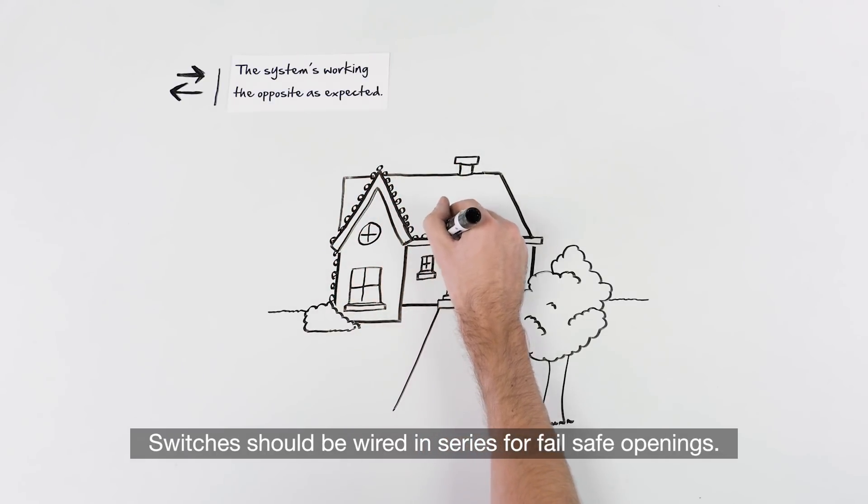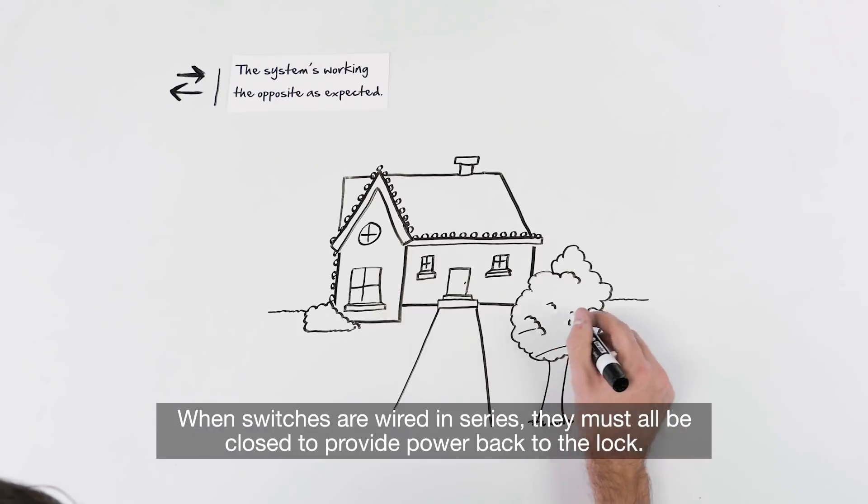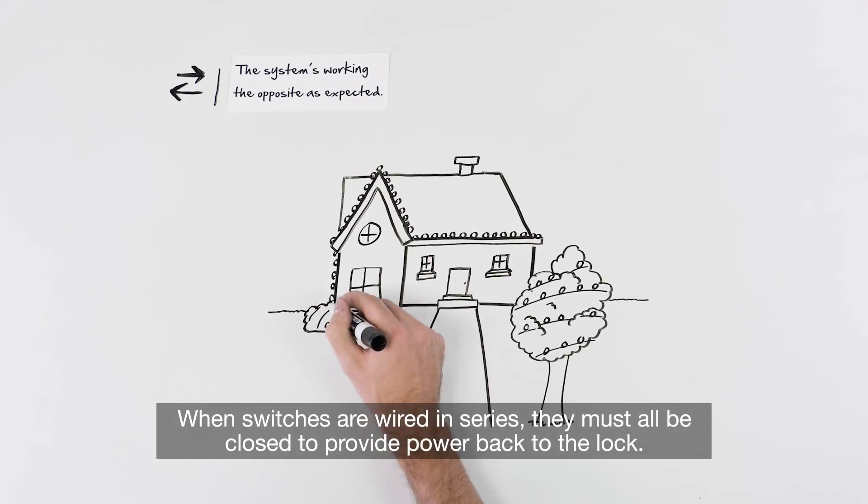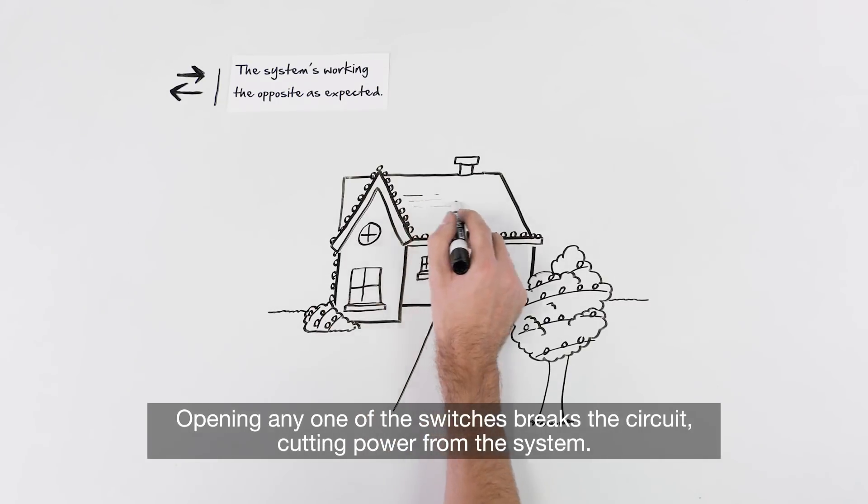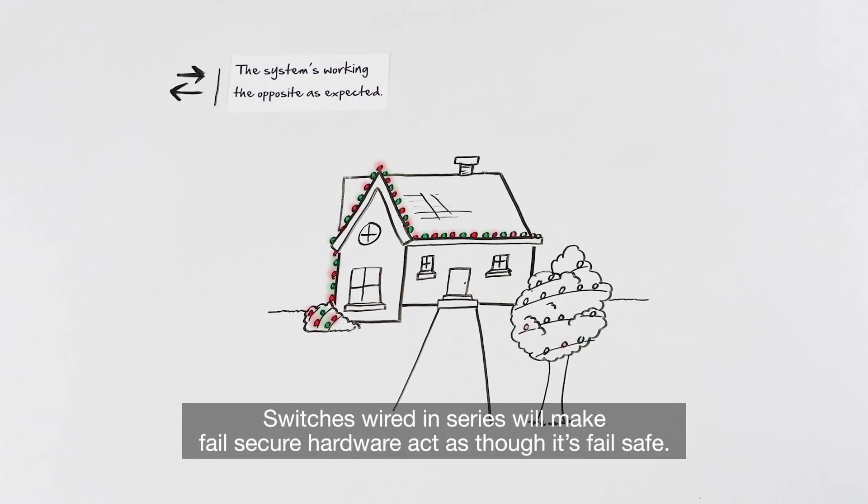Switches should be wired in series for fail-safe openings. When switches are wired in series, they must all be closed to provide power back to the lock. Opening any one of the switches breaks the circuit, cutting power from the system. Switches wired in series will make fail-secure hardware act as though it's fail-safe.